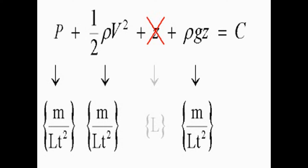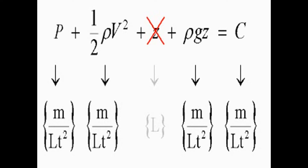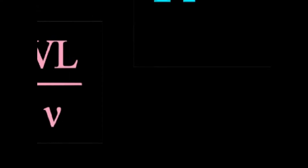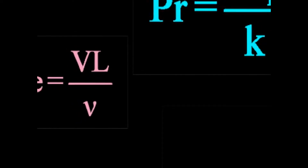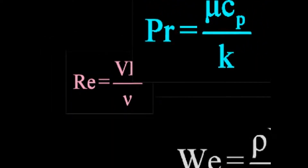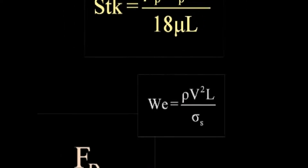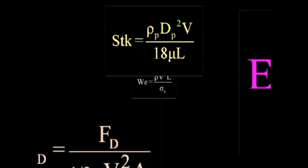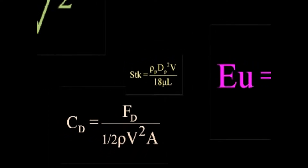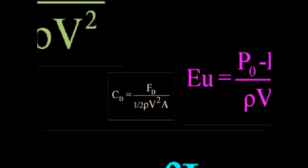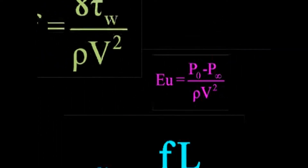Of course, the Bernoulli constant, or total pressure, must have the same dimensions of mass over length times time squared as all the other terms. This basic requirement of dimensional homogeneity naturally leads to a set of non-dimensional parameters that describe all sorts of fluid phenomena. By understanding the role of these non-dimensional parameters, we can learn a lot about fluid phenomena without actually having to solve the equations of motion.